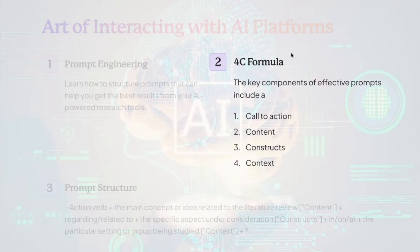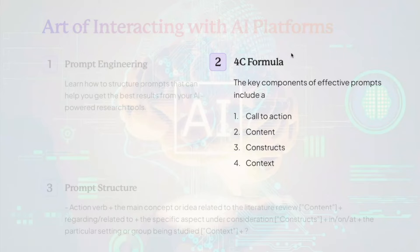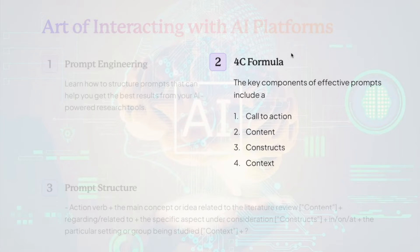The first thing is the call to action — what action do you need, what do you need this AI platform to do? The call to action is a verb, a call for action. For example, the word 'write' is a call to action. When you say 'write,' the system is ready to produce something.